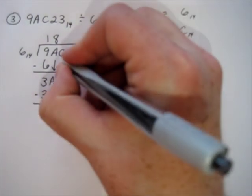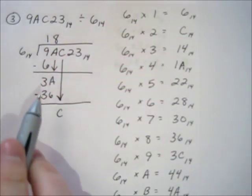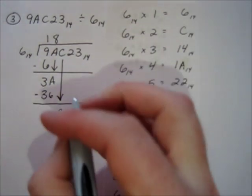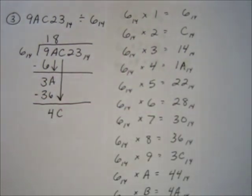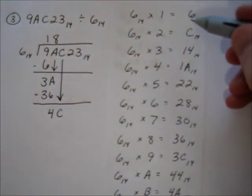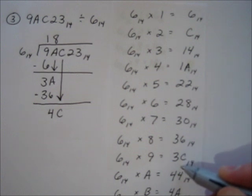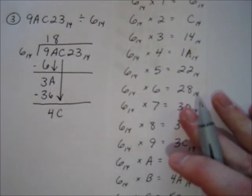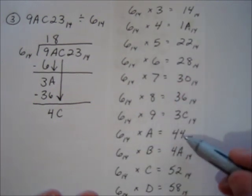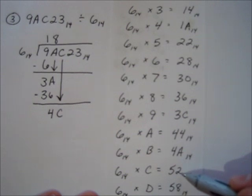So subtract, bring down. This is really 10, so 10 minus 6 is 4. And so now we've got 4C, and what's the largest thing that's still smaller than 4C? So we go down our list: I get to 44, 4A. 52 is bigger, 4A is still smaller than 4C, so the answer is B.